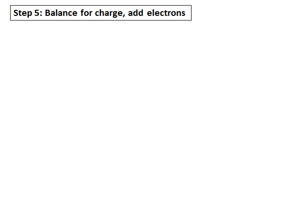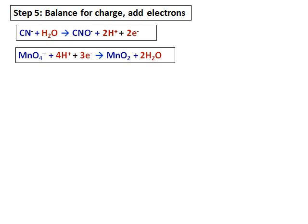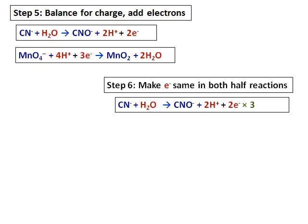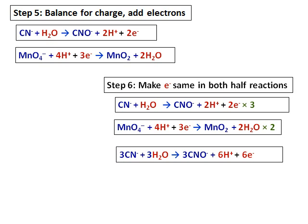So, step 5 is, balance for the charges by adding electrons. So, this way, I add 2 electrons to the first half reaction and 3 electrons to the second half reaction. This balances the positive charge. So, now, I need to make the 2 electrons, the electrons same in both the equations. So, I need to multiply the first equation by 3 and the second equation by 2. This results in a total of 6 electrons on both of them as written there.